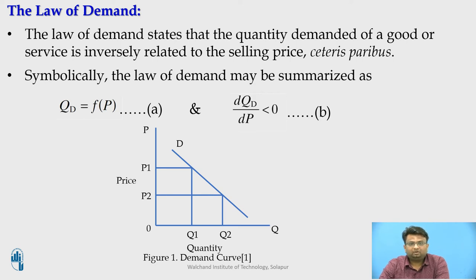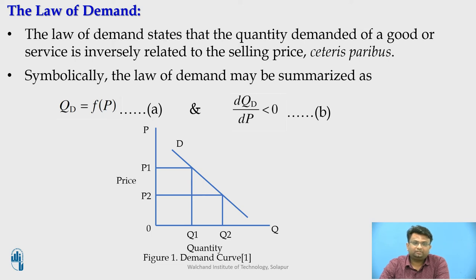The validity of the law of demand may be argued on the basis of common sense and simple observation. At a more sophisticated level, it may be argued on the basis of diminishing marginal utility and the income and substitution effects. For example, suppose you want to buy mangoes at 100 rupees per dozen — you buy 6 dozens. If the price increases to 200 rupees, you will definitely buy a lesser quantity. This shows an inverse relationship between price and quantity demanded: the higher the price, the lower the demand; and lower the price, the higher the demand.